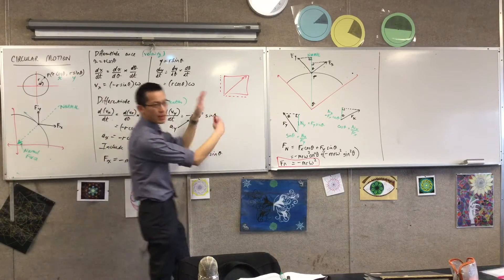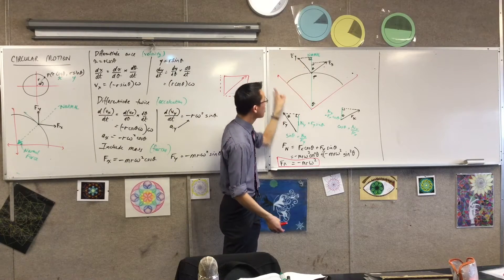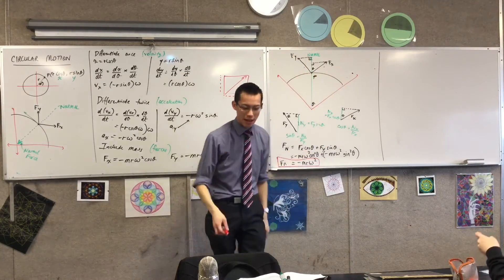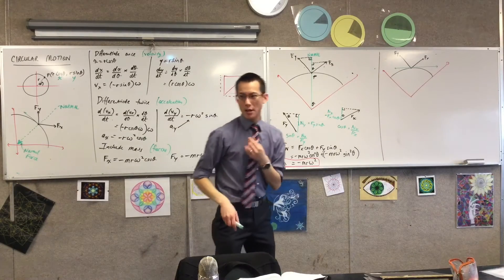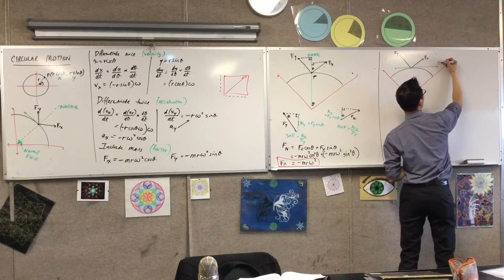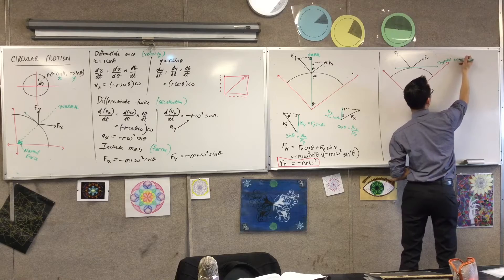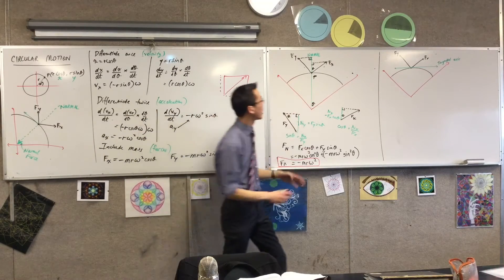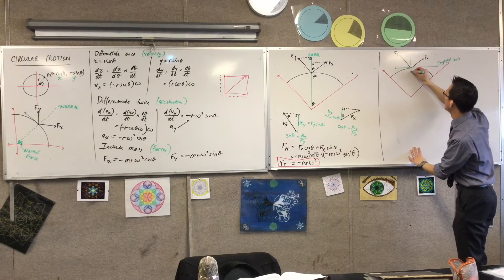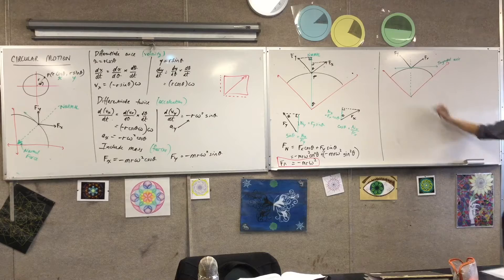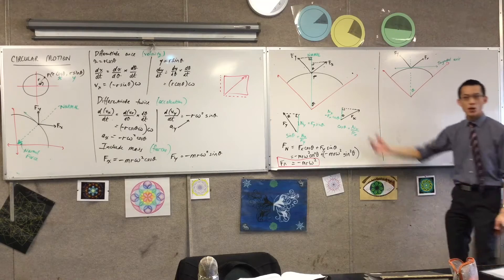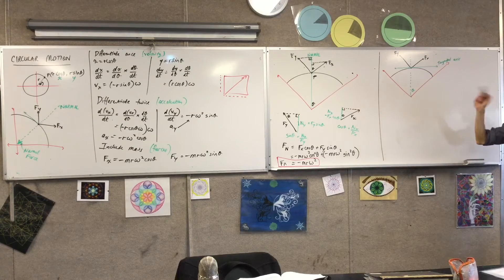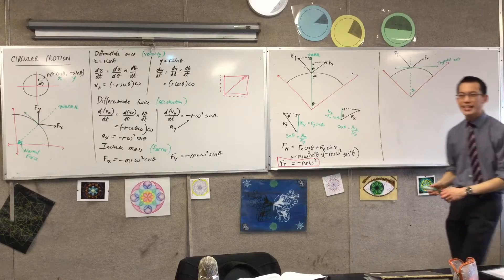Now we're going to draw this again, because this diagram is going to get so busy — I've seen textbooks try and jam it into one. I'm going to actually draw this diagram again, but instead of having the normal axis, I want to compare it to this tangential axis and we'll find something really interesting. Even though I'm focusing on the tangential axis, I still need the normal axis in there — maybe in dotted lines — because my angular displacement depends on the normal; that's where it's measured from.